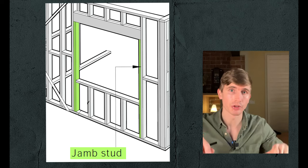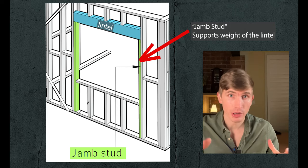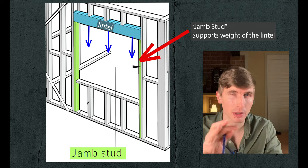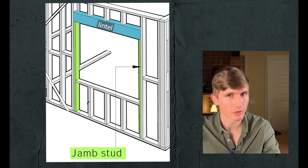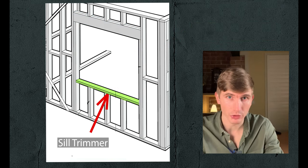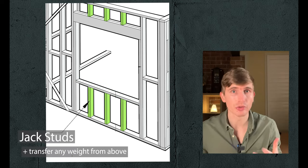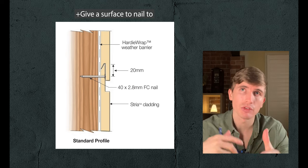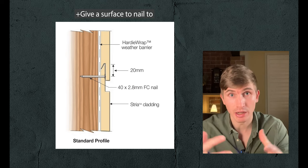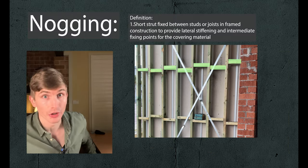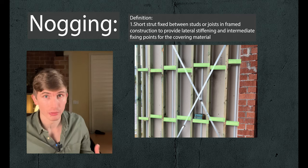The ends of the lintels sit on pieces called jam studs. The jam studs support the weight of the lintel, and depending on the span of the lintel you may need a few of these. Below your window you'll find the sill trimmer, which supports the windowsill. These empty spaces below a window or above a door are filled with short studs called jack studs. These give the surface that plasterboard and cladding can be nailed to. These little bits are called noggins — they act as horizontal bracing between studs, known in New Zealand as dwangs or in America as blocking. All this structure bears the weight around the opening so that the doors and windows don't have to.